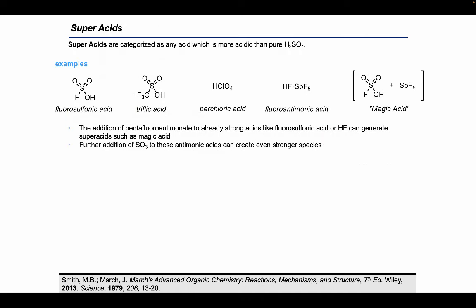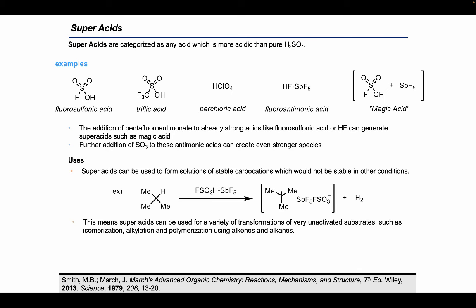Finally, we are going to finish this episode by talking about some special cases, super acids and super bases. Super acids are aptly named, as they are defined as any acid more acidic than pure H2SO4. You are likely familiar with fluorosulfonic, triflic, and perchloric acids, which are classified as super acids. However, these acids can be made even stronger through the addition of compounds like pentafluoroantimonate. Adding pentafluoroantimonate to HF can generate a super acid, shown on the slide, and the combination of pentafluoroantimonate and fluorosulfonic acid is an extremely strong acid, which is also known as magic acid. Super acids are so acidic that stable carbocations can be formed in super acid solution. These can be formed from a variety of compounds, even sp3 compounds like t-butane, shown on the slide, which reacts with magic acid to form a stable carbocation. This property has allowed super acids to enable reactions with very unactivated substrates.